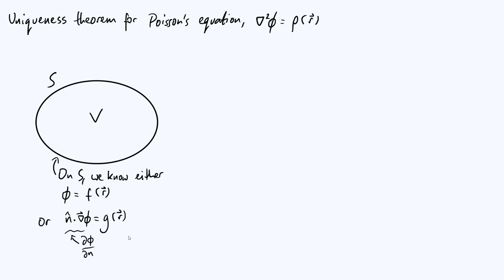What the uniqueness theorem states is that if we can find some function phi that satisfies Poisson's equation and also satisfies the given boundary conditions for a particular problem, then that function phi is unique, possibly up to an additive constant. For physical problems, we generally don't care about that additive constant, for reasons I'll go into towards the end of the video.